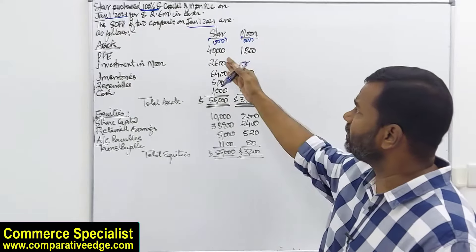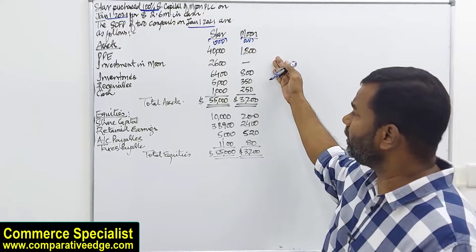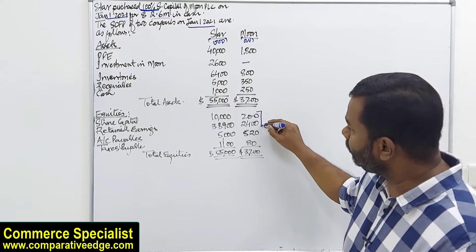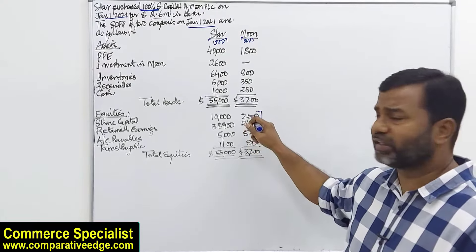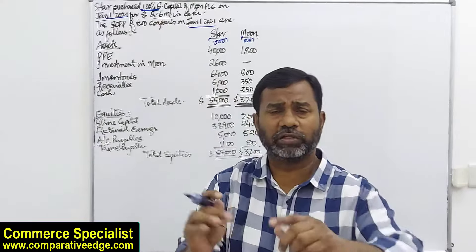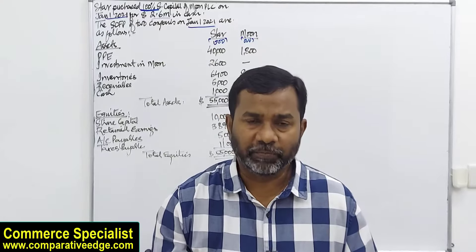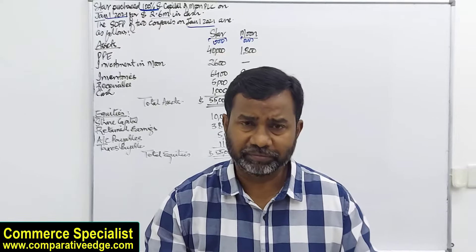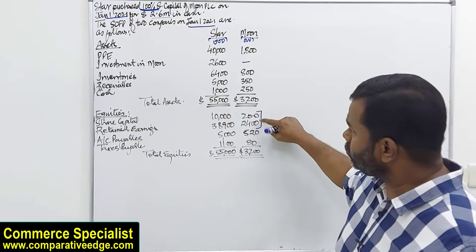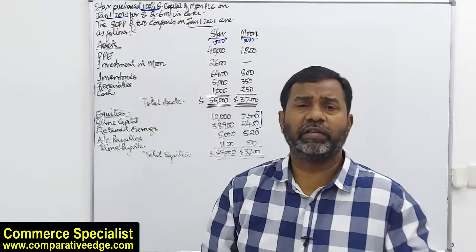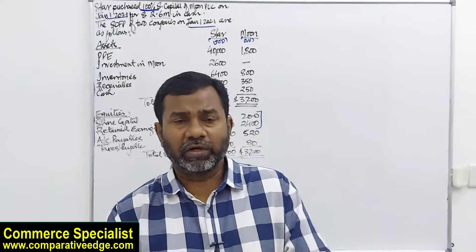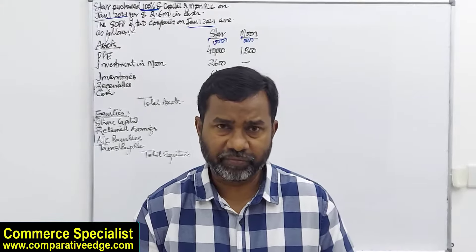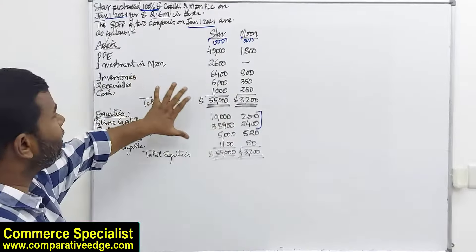2.6 million has been paid for the equity of Moon company, which is exactly 2.6 million, so there is no goodwill. Goodwill is an amount which is paid over and above the fair value of the assets being purchased. Here the equity of Moon company is 2.6 million and exactly 2.6 million is paid, therefore there is no goodwill. Goodwill is dealt with under IFRS 3 Business Combinations, which we will discuss as the video progresses. This is a very simple and straightforward question to begin with.